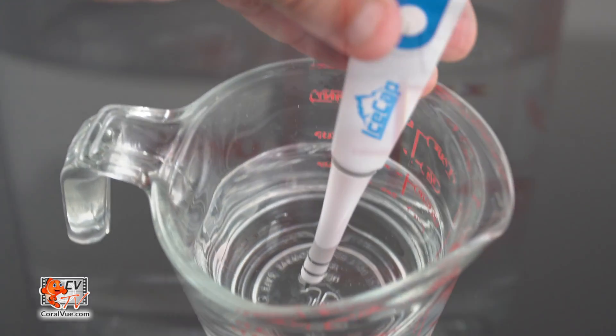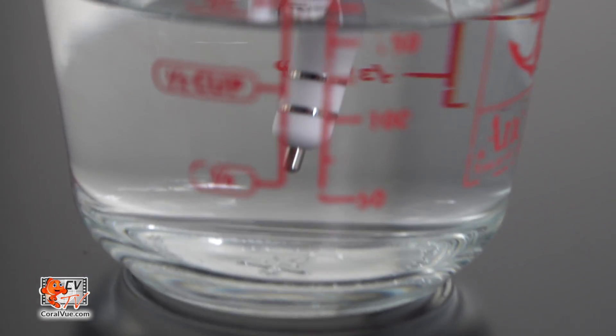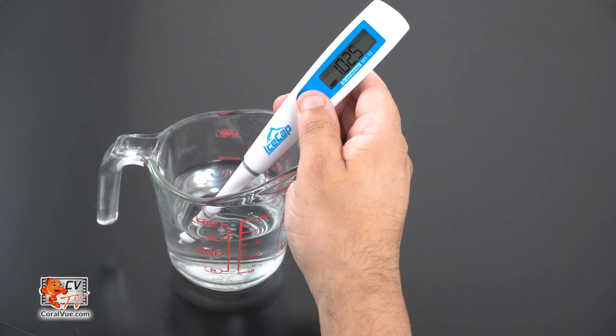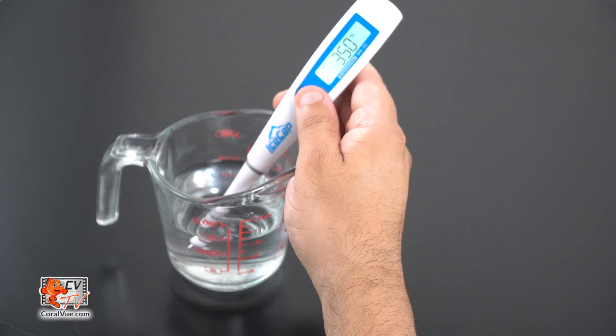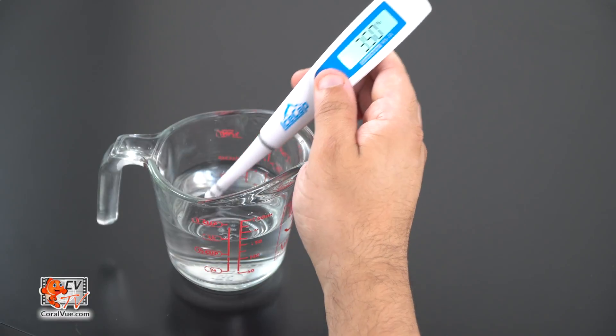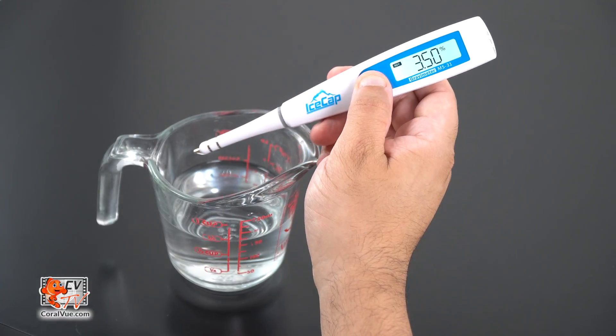Again, it is very important to be sure that there is enough clearance all the way around the tip of the pen. Within a few seconds, the display will flash the salinity followed by the adjustment percentage, indicating the ice cap salinity pen has been calibrated.